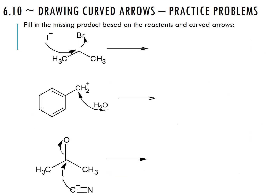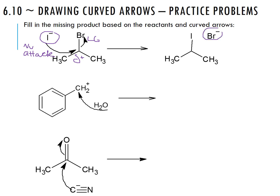Now we'll fill in the missing products based on the curved arrows. In the first problem, iodine is going toward that carbon — that's a nucleophilic attack because iodine is the nucleophile forming a bond to the partial-positive carbon. The second arrow to the bromine is the leaving group arrow: electrons going onto bromine, showing that bond breaking. Our product has bromine as the leaving group and iodine now bonded to that carbon.